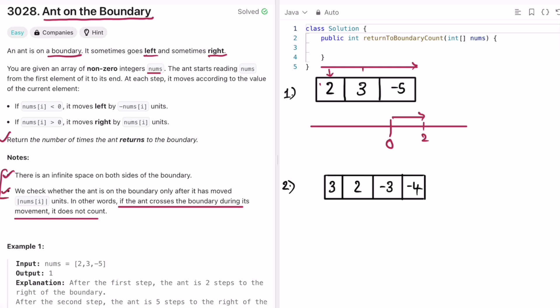Next we go to the next element. It is three. So it goes three more steps and it goes to five. And now we go to the last element. It goes minus five, so it comes minus five steps to its left and now the ant is back to its boundary.